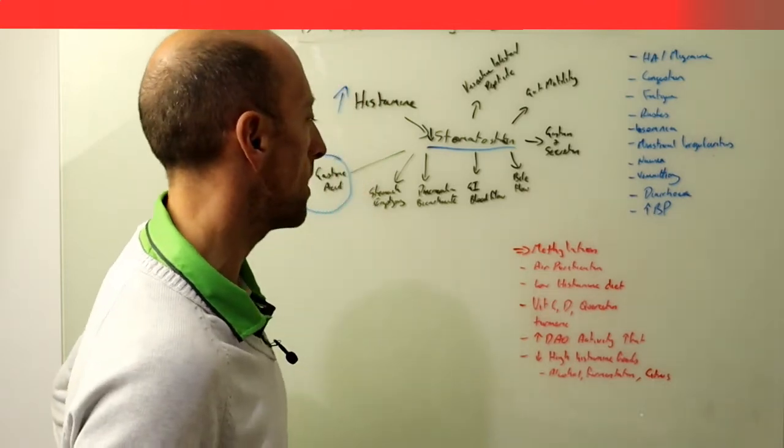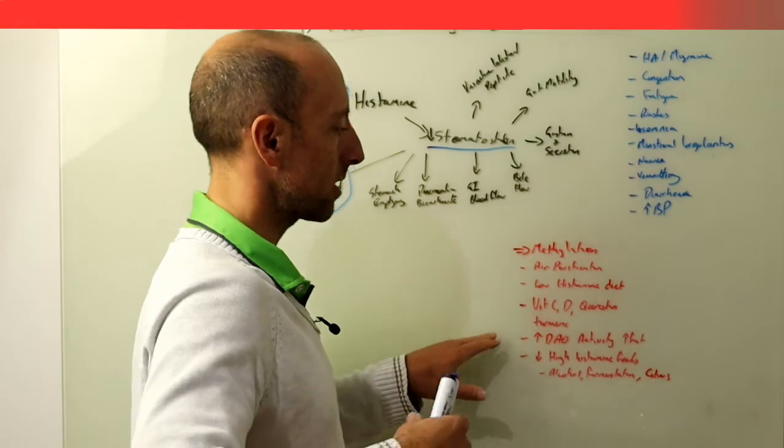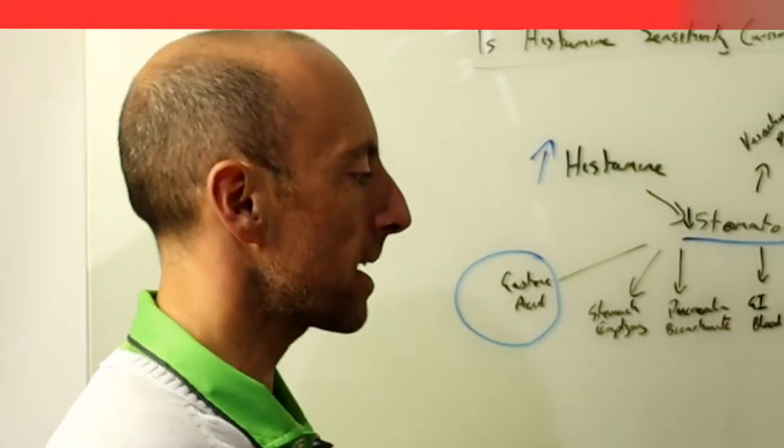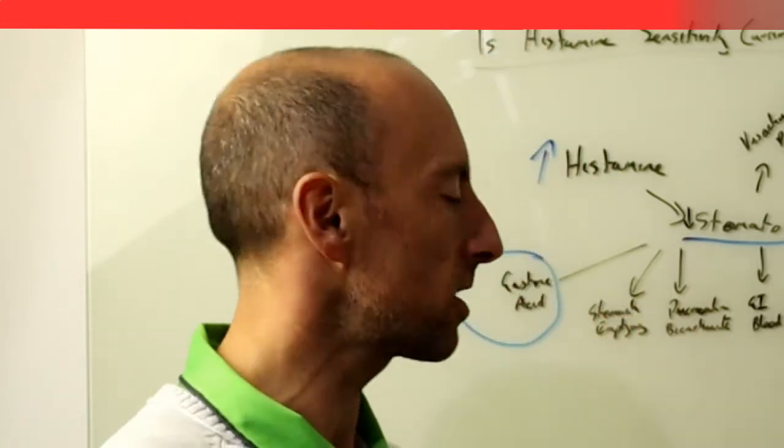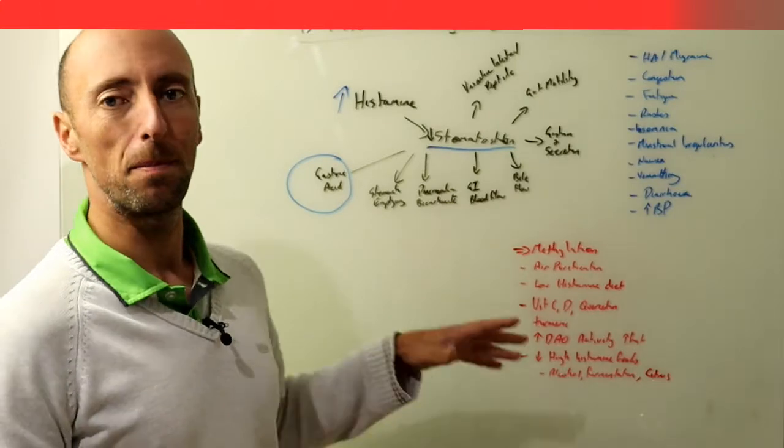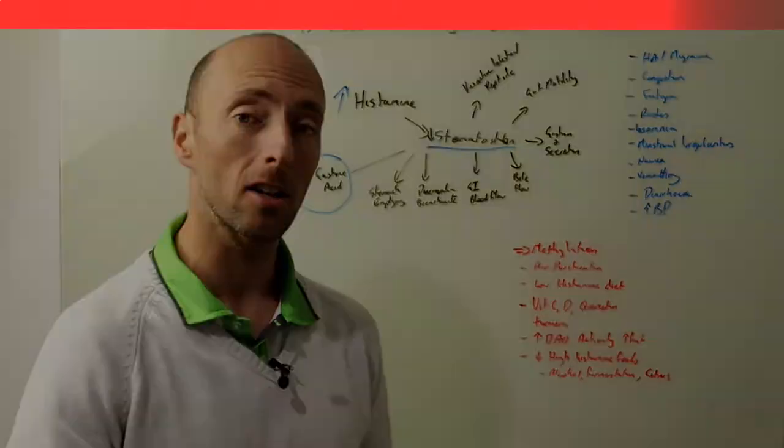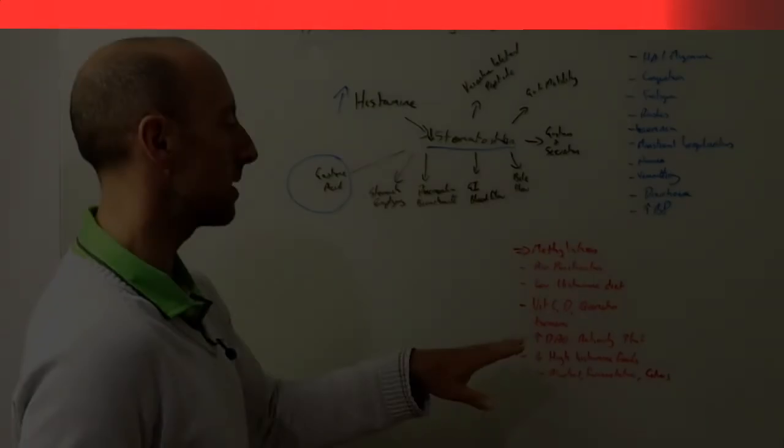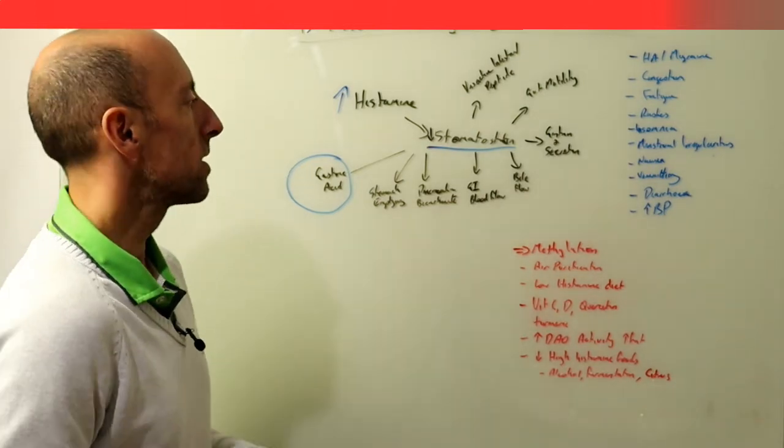In addition to methylation, there's another process for elimination which is part of what we call the DAO. If we stimulate this mechanism of DAO, we can actually improve elimination of histamine as well. One of the big ways we do that is by saturated fat and monounsaturated fat—things like olive oil, coconut oil, these types of things can potentially have a stimulatory effect on DAO as well.